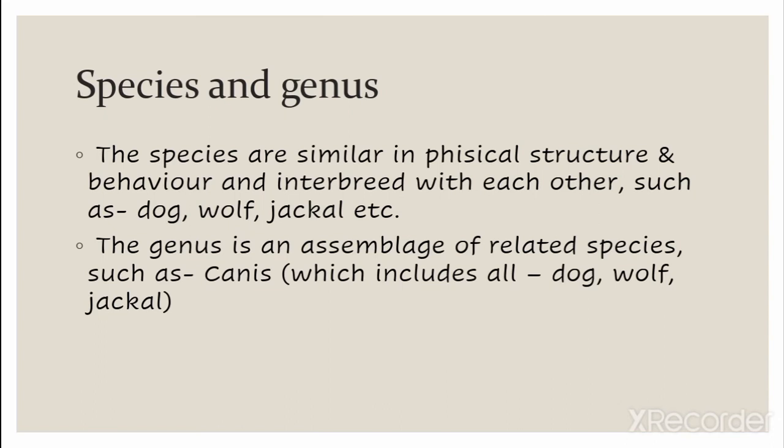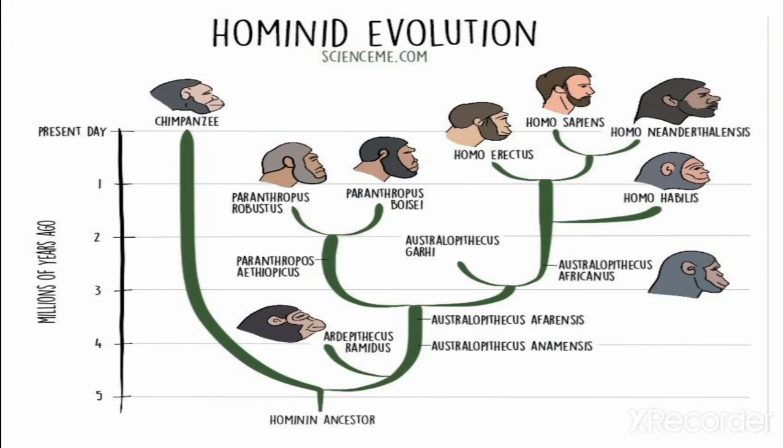Genus is a broader term that encompasses many species. For example, Canis is a genus that includes dog, wolf, and jackal — they are all of the same genus because their features are somewhat similar. So genus is a broad term containing many species, while species is a specific term — and species interbreed with each other. I hope this concept is clear. So let's come to the hominid evolution.